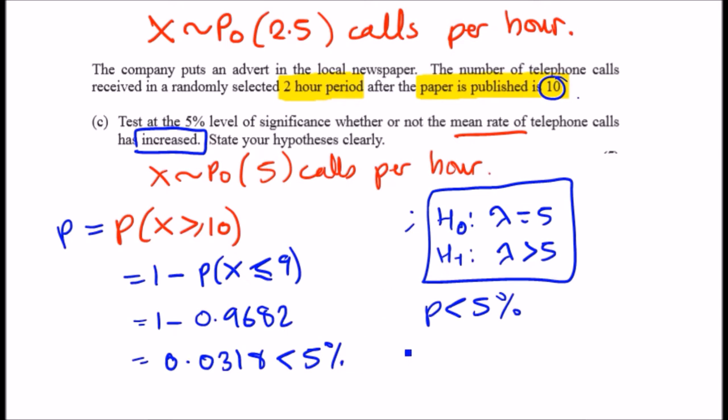We always say that there is enough evidence or sufficient evidence to reject the null hypothesis, to reject H₀. So if we can reject H₀, this implies that we have to accept...